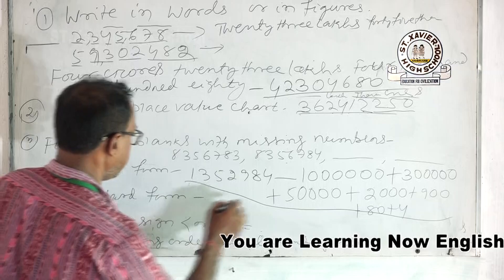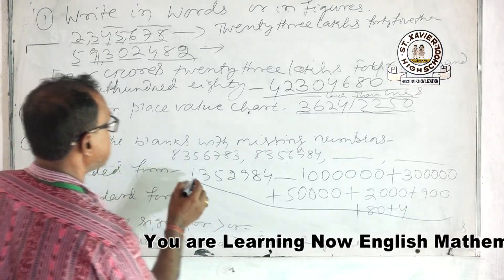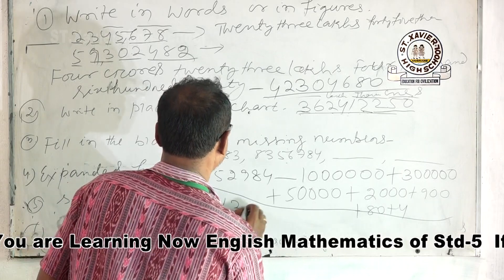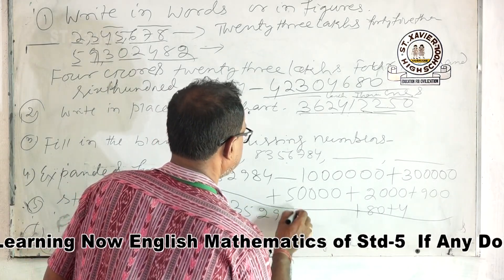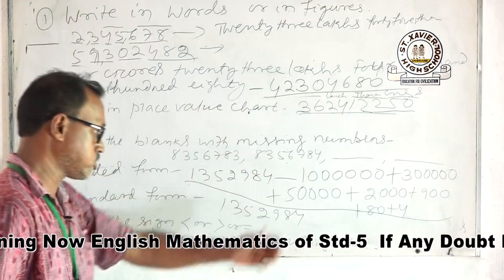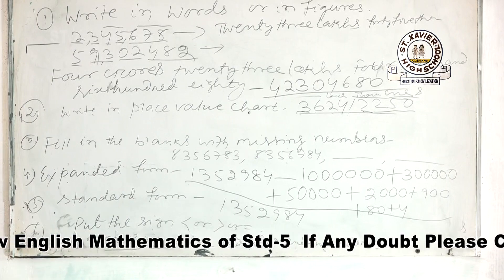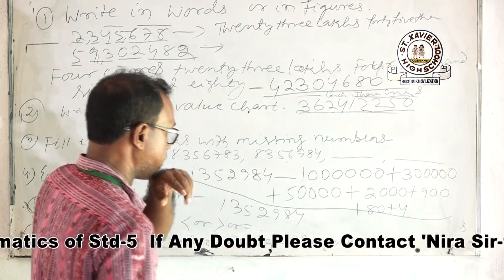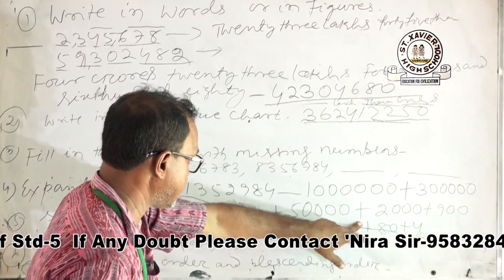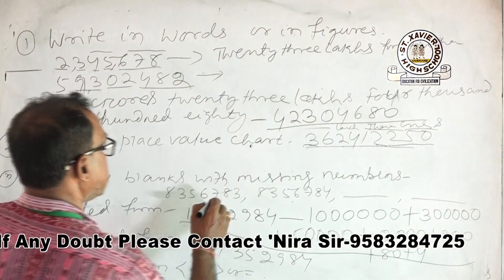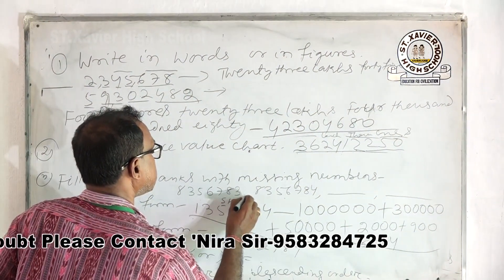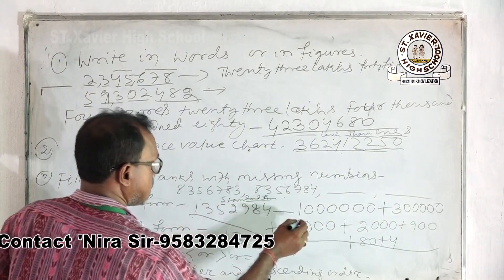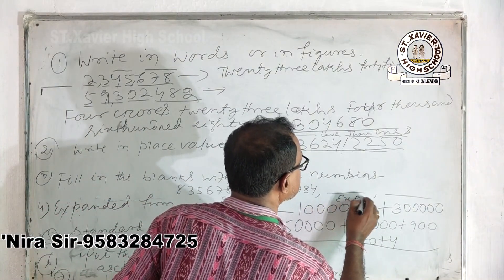This is the expanded form. To go back to the standard form, you simply reverse the process and write the number as 1352984. The expanded form breaks the number into its place values, and the standard form is the original number written together.